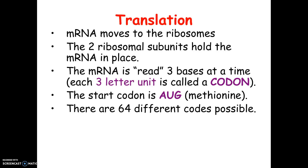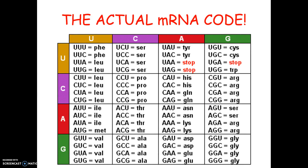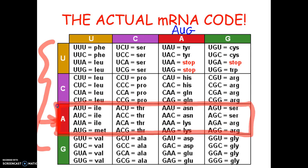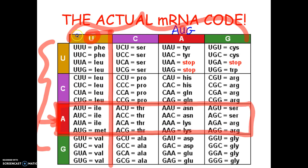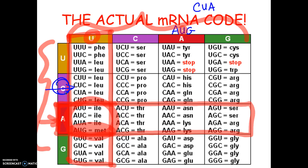There are actually 64 different codes, and you need to be able to read this chart on a test. For example, for the code AUG: take your first letter A and find it on the left side of the chart. That gives you the row. The second letter U is found at the top, giving the column. Where the row and column intersect is the box — AUG, which codes for methionine. For CUA: first letter C gives you the row, second letter U gives the column, and CUA codes for leucine.